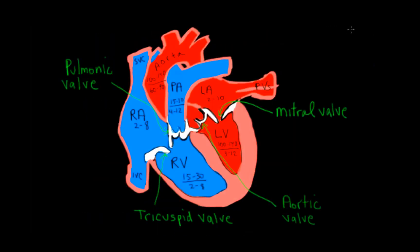Looking at a cartoon of the anatomy, the right atrium receives blood from the superior and inferior vena cava, and the left atrium is also visible. The average atrial pressures are low, as noted earlier, with the left atrium slightly higher than the right. The right ventricle peak pressure is 15 to 30 mmHg, and the end-diastolic pressure is 2 to 8 mmHg. In the pulmonary artery, the peak pressure is very similar to the right ventricular peak, and the minimum diastolic pressure is 4 to 12 mmHg.